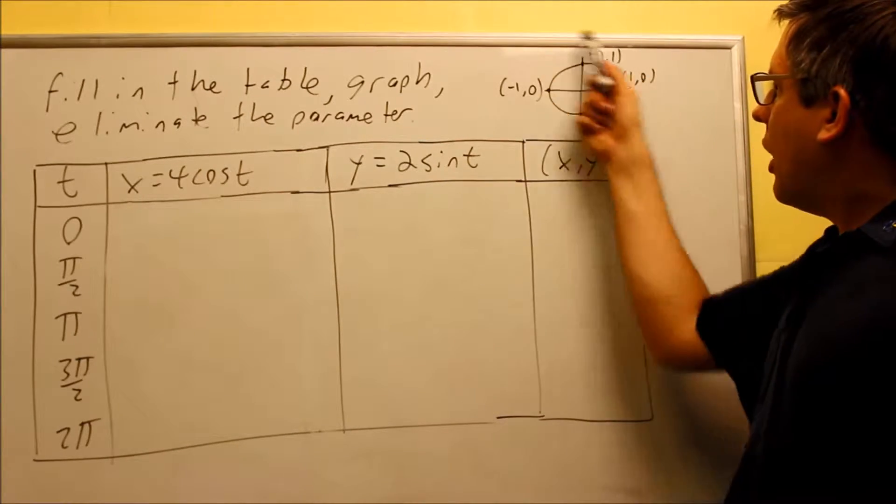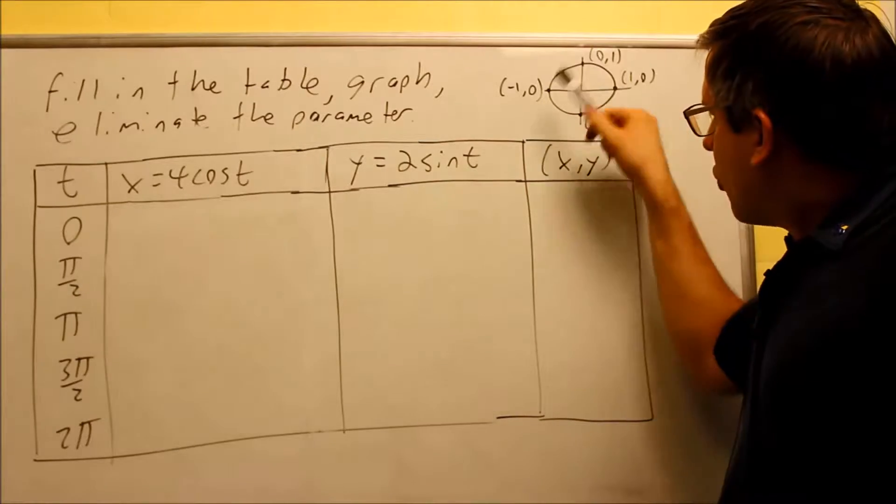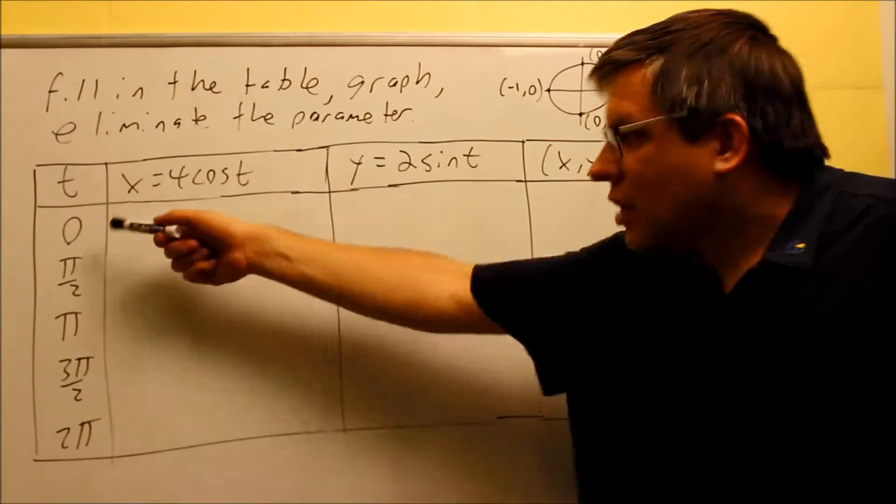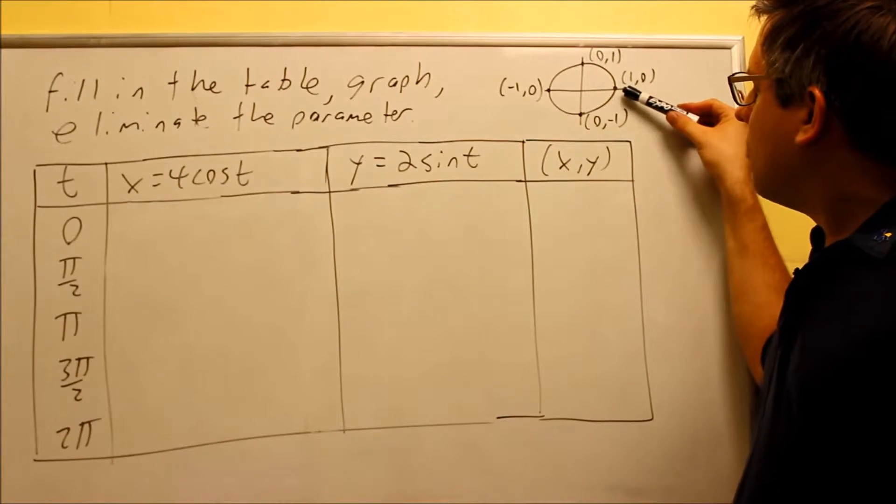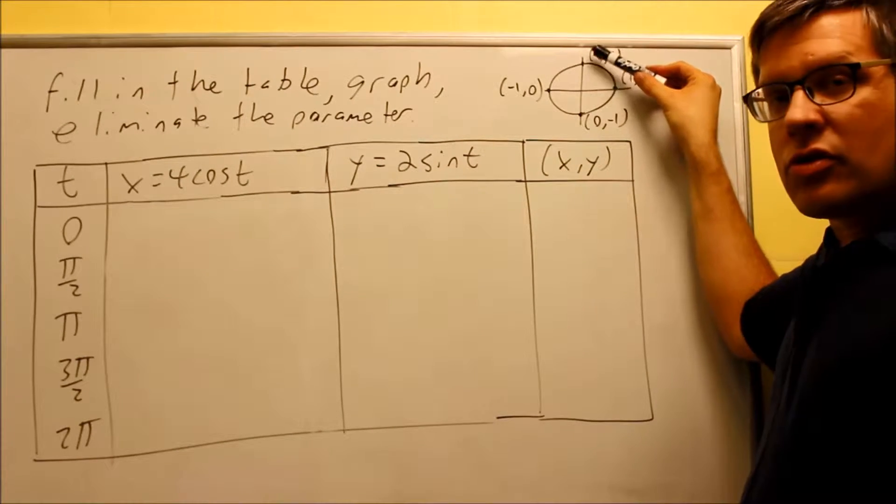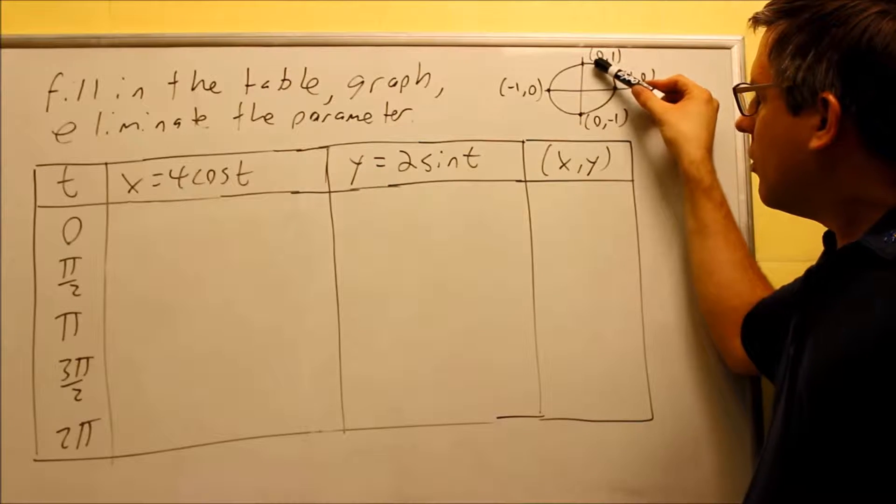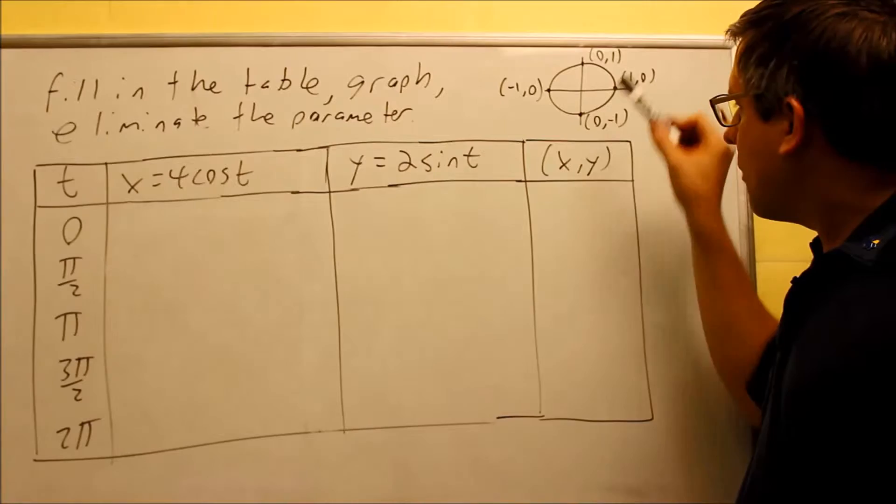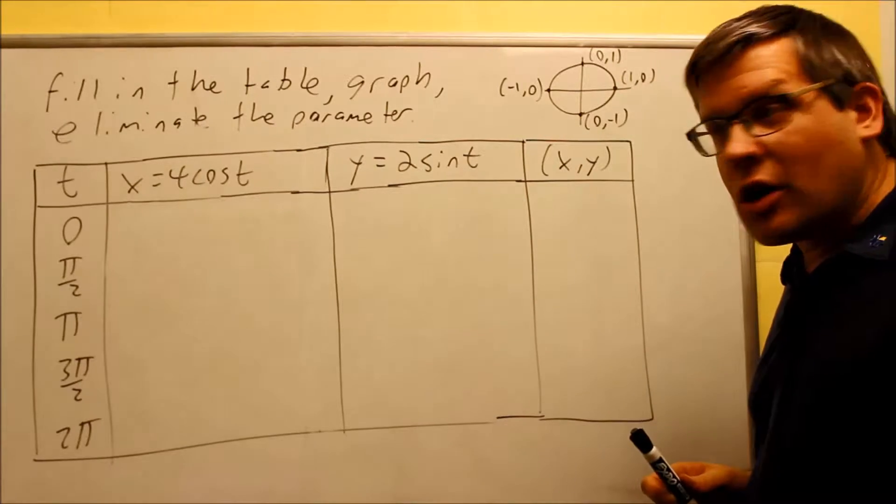Now I drew a unit circle up here that corresponds to the values for t. So t is an angle in this case. So I have 0, and then I have π/2 which is 90 degrees. That's this point. This one over here refers to π. This one down here, 3π/2. And 2π comes back to the original starting point.